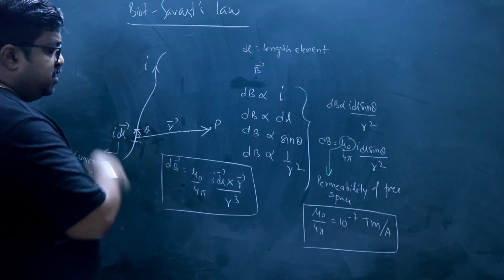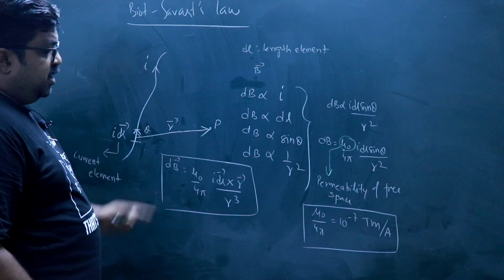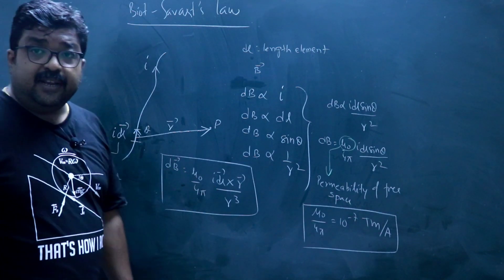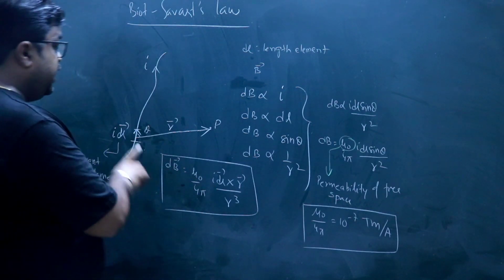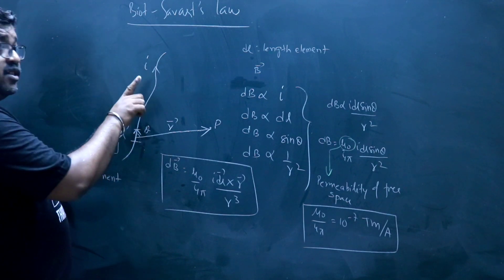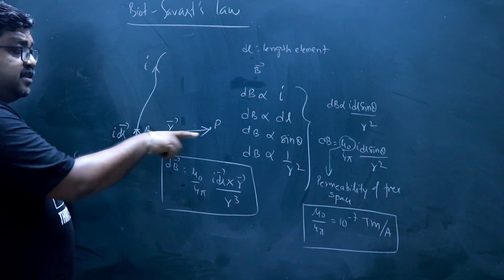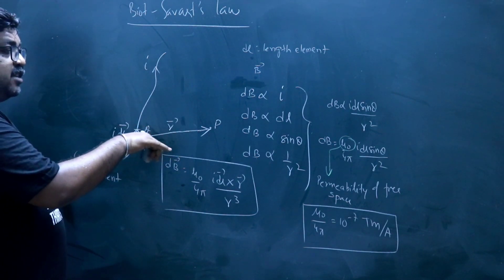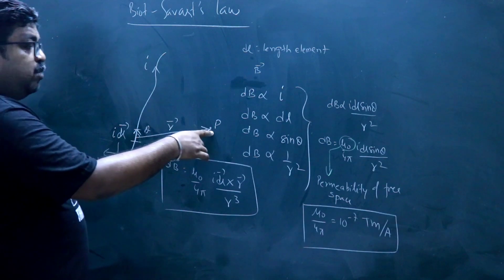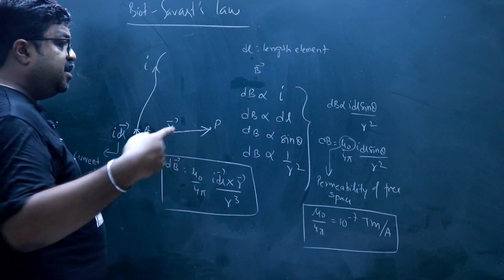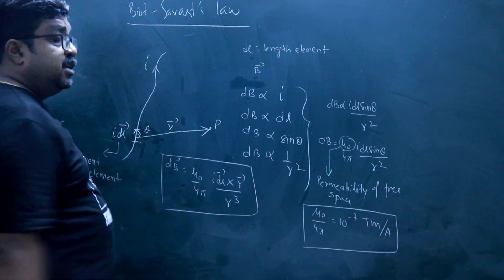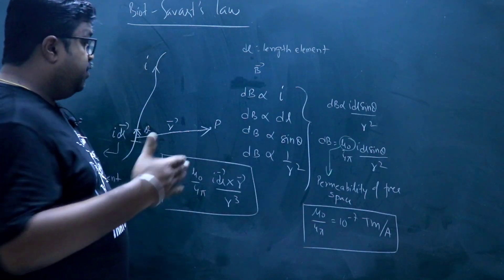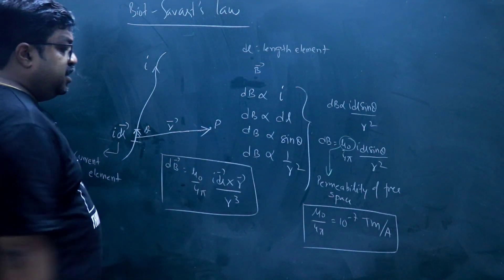What is the meaning of this? dB is perpendicular to the plane containing idl × r. Now idl is in the upward direction and r is in this direction, so idl × r will be in the inward direction. So at point P, the magnetic field will be directed inward — perpendicular to the plane of the board and in the inward direction.